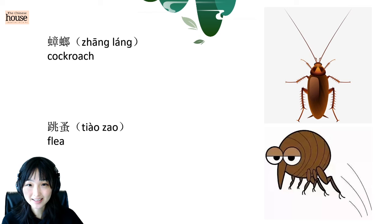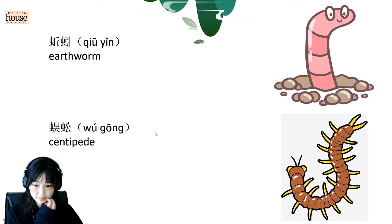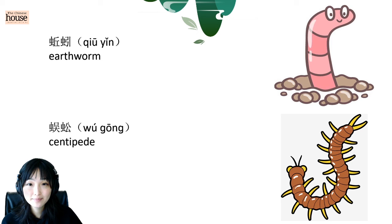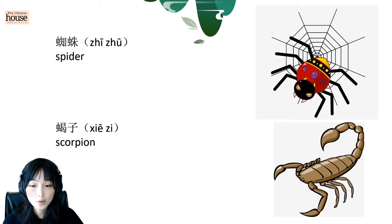And then, earthworm. 蚯蚂. 蚯蚂. Good. 蚯蚁蚁. Nice. Centipede. 蚯蚁蚁. Read after me. 蚯蚁. Good. 蚯蚁. Good. 蚯蚁蚁. Next one. 蚯蚁. Spider. 蚯蚁. Good. 蚯蚁蚁. Scorpion. 蚯蚁. Nice.